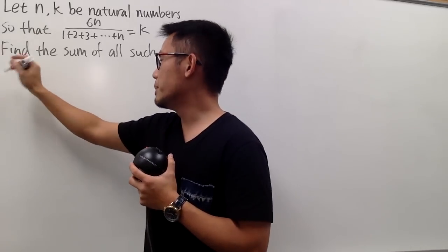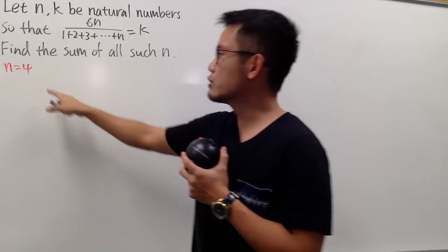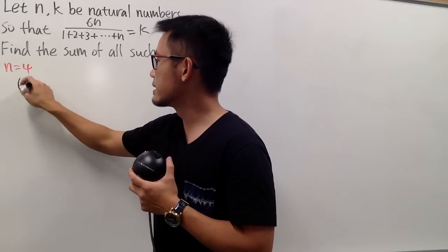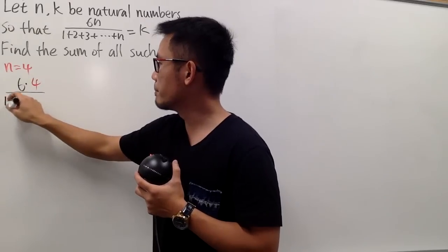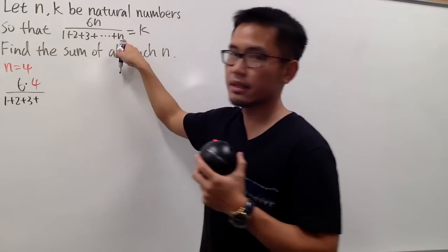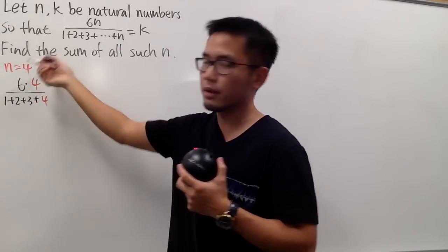Let me pick an n value, let's say n equals 4, and in that case, I will just plug in 4 into this n and that n. On the top, I will just have 6 times 4, and on the bottom, it's going to be 1 plus 2 plus 3, and I will just stop it at 4 because that's the n value that I picked, which is 4, right?